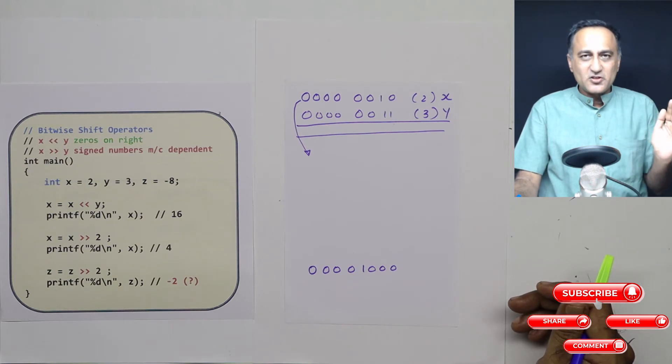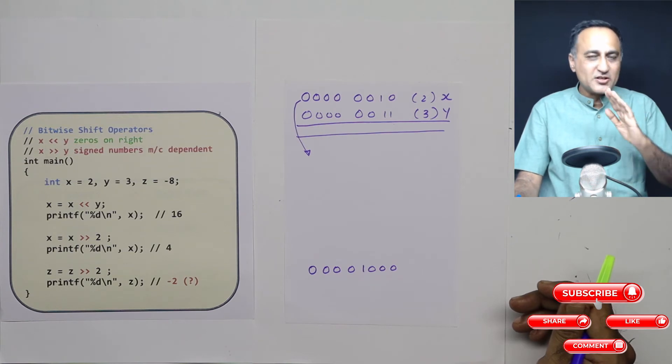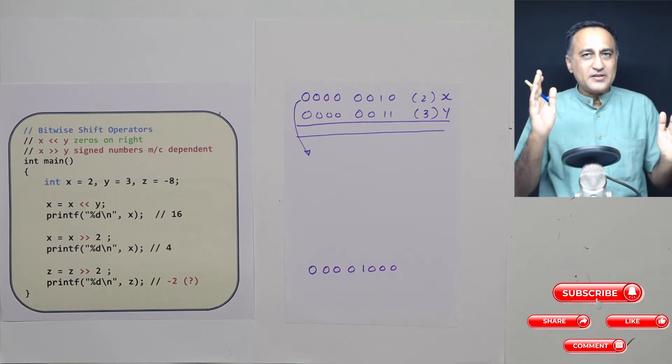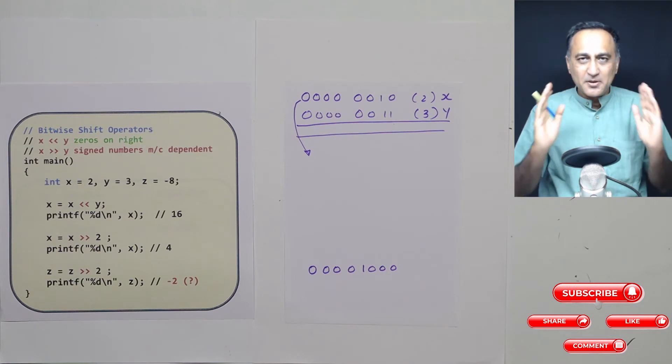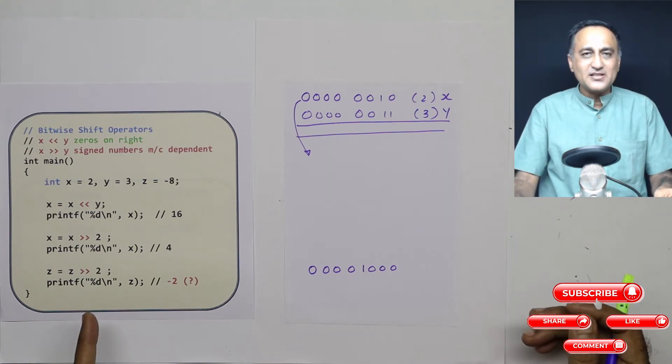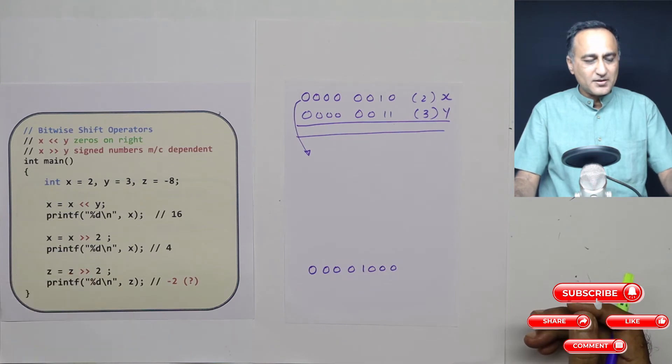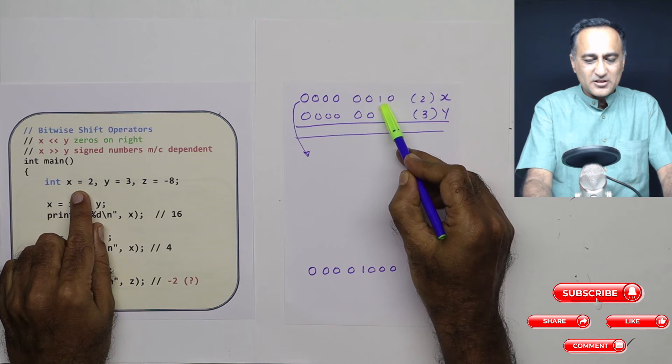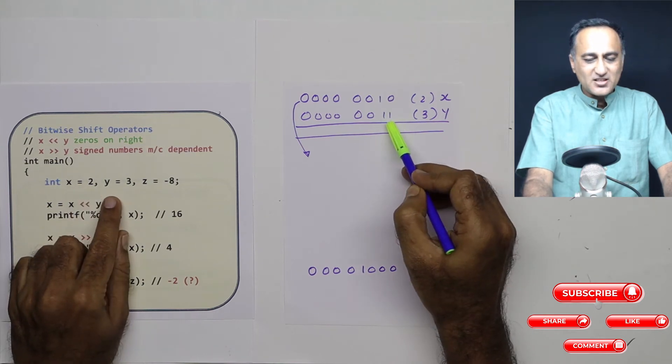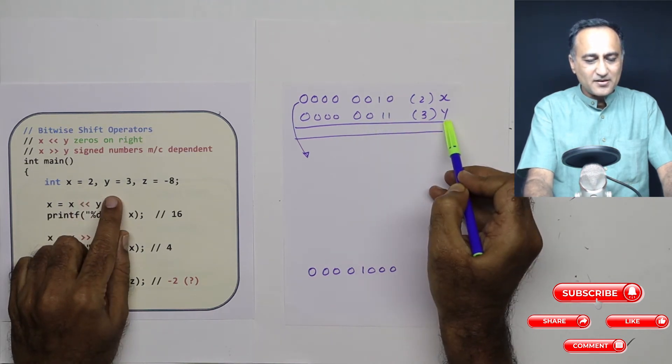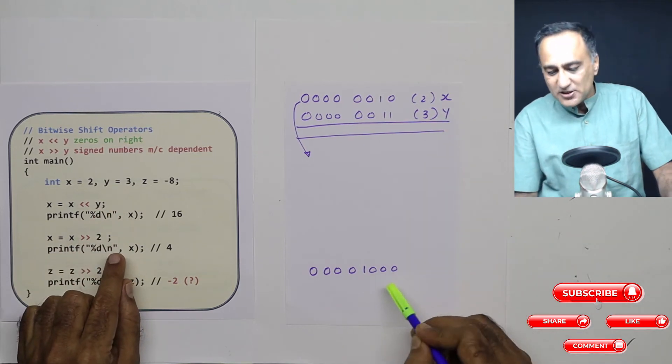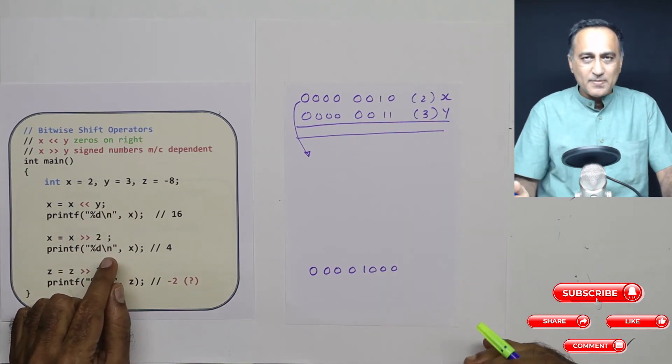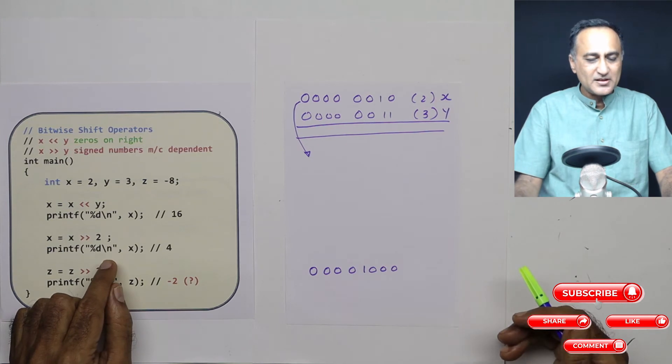The left shift is generally not going to be a problem because whether it's a signed or unsigned number, when it shifts left, the vacant right bits are always going to be filled with zeros on any machine. But the right shift is a little tricky, which I'll tell you in the third example. Here, x is two represented in binary, y is three represented in binary, z is minus eight - I've just represented plus eight here and I'll show you how I make it minus eight.